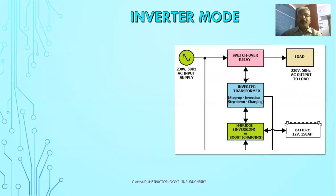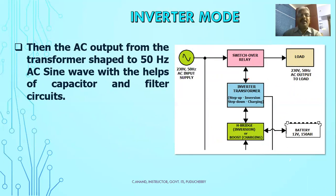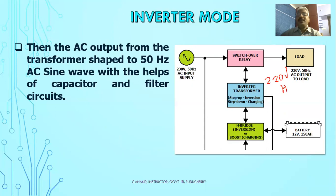The AC output from the transformer is shaped to a 50Hz AC sine wave with the help of capacitor and filter circuits, producing a 220-volt 50Hz supply.